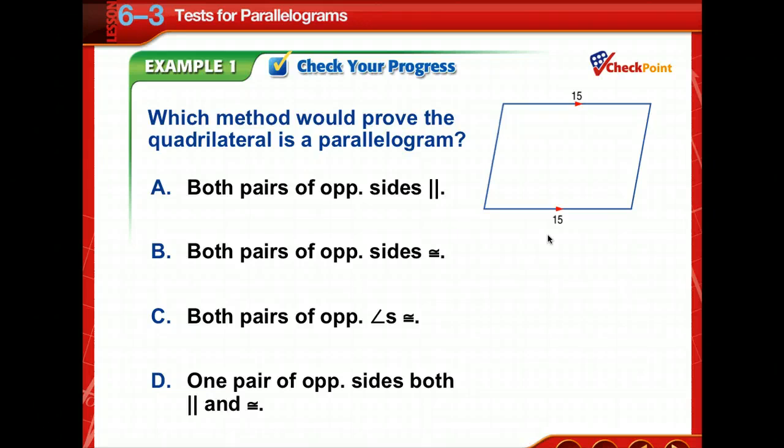From those theorems, those conditions for parallelograms that we saw earlier in the slides, let's see which method would prove that this quadrilateral is a parallelogram. Notice one pair of opposite sides is both congruent and it is parallel. So that's what proves that this is a parallelogram.